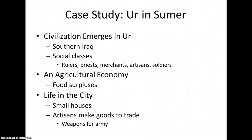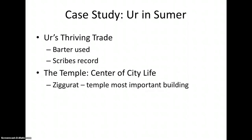Ur was a civilization that flourished about 3000 BC in what is now southern Iraq. The population swelled to about 30,000 individuals who lived in well-defined social classes — rulers, priests, wealthy merchants, artisans, and soldiers. Ur also developed an agricultural economy, and food surpluses kept the economy thriving. Families lived in small houses tightly packed near one another. Artisans made trade goods and weapons for the army. Goods and services were bartered in Ur, meaning they were traded without using money. Scribes made records of transactions. The temple served as the center of city life, and the ziggurat — a temple — was the tallest, most important building in the area, where priests carried out religious rituals.